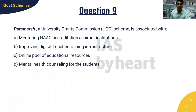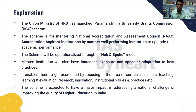Question nine: PARAMARSH, a UGC scheme, is associated with — mentoring NAAC accreditation aspirant institutions, improving digital teacher training infrastructure, online pool of educational resources, or mental health counseling for students? The answer is option A — mentoring NAAC accreditation aspirant institutions. Launched by the Ministry of HRD, this UGC scheme mentors aspirant institutions through another well-performing institution to upgrade their academic performance. It is operationalized through a hub-and-spoke model.